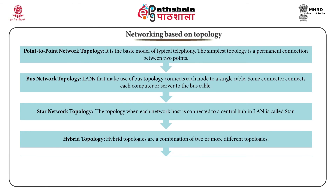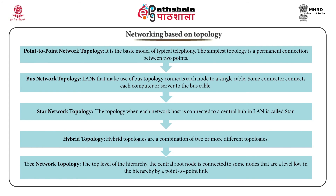Hybrid topology: when two or more topologies are combined, it is called a hybrid topology. WANs make use of hybrid topology because they join a variety of LAN topologies. The benefit of hybrid topology is that it links different topologies, but the disadvantage is that it can be complex to set up and manage. Tree network topology: in a tree network topology, the top level and the central route is linked to lower levels of nodes through a point-to-point link. The second level connected to a central route can further be connected to the third level by a point-to-point link.